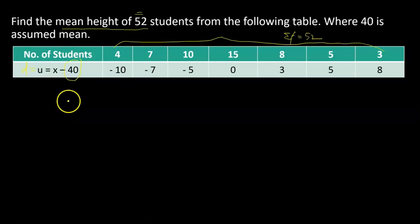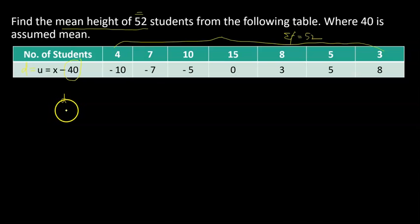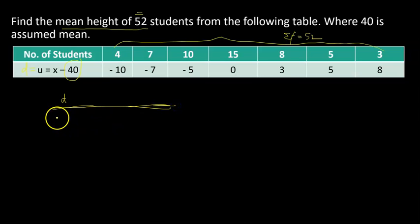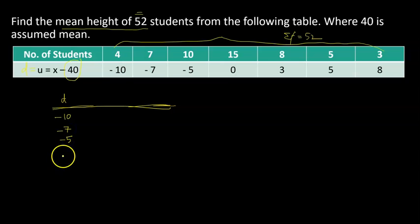Let me write it in a proper format to calculate the arithmetic mean. So the deviations are: negative 10, negative 7, negative 5, then 0, then 3, then 5, then 8.